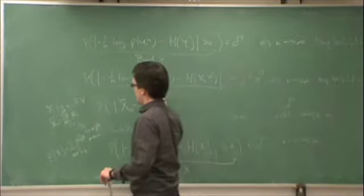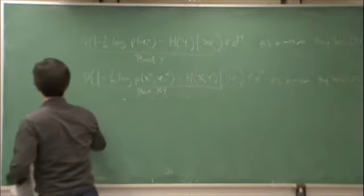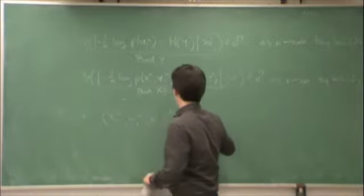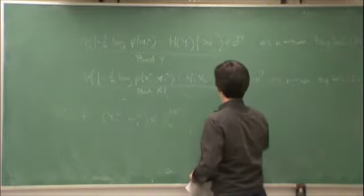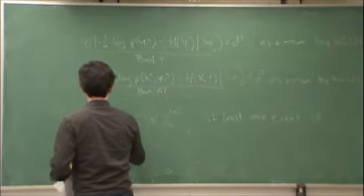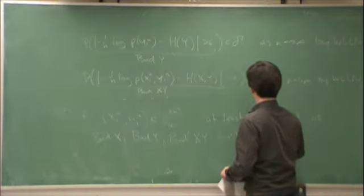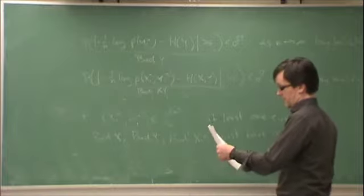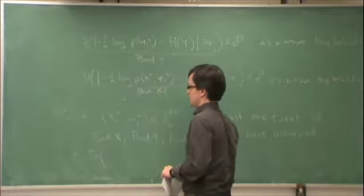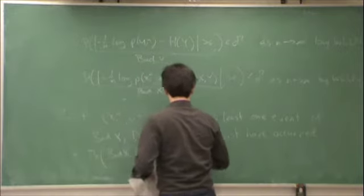So, if (x_1^n, y_1^n) is not in the jointly typical set, then at least one of the events bad x, bad y, or bad xy must have occurred. What we want is the probability of the union of these events — more than one can occur, so we take: P(bad x ∪ bad y ∪ bad xy).